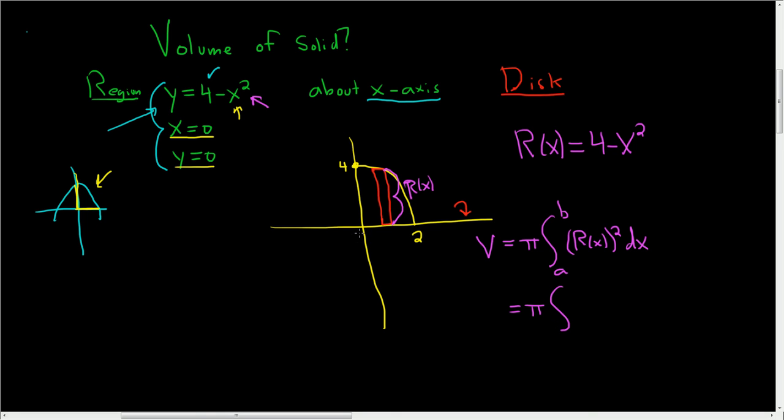And a here is 0. We're integrating with respect to x, so we go from 0 to 2. And then we have big R, which is 4 minus x squared, and that's being squared. And then we still have the dx.